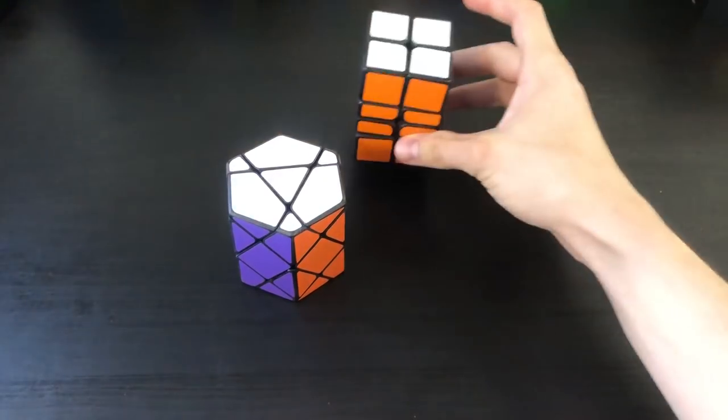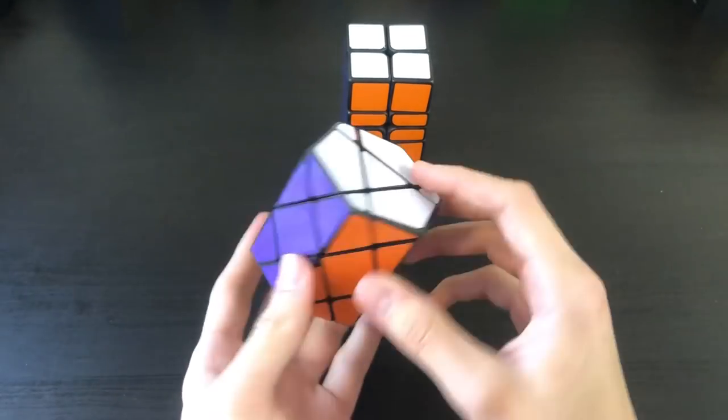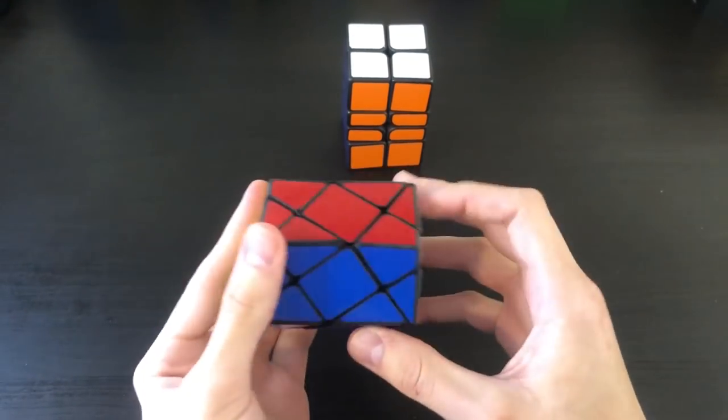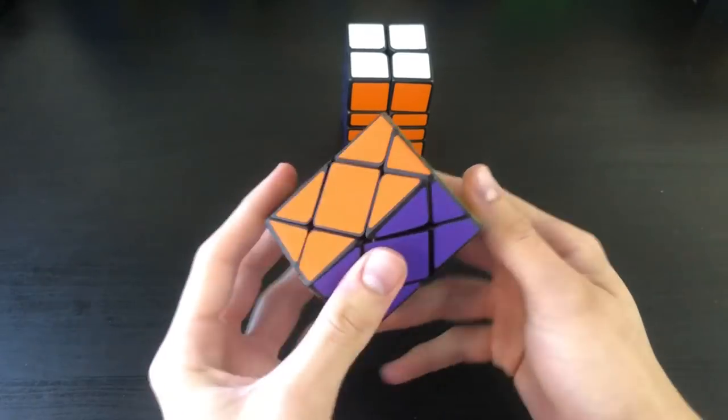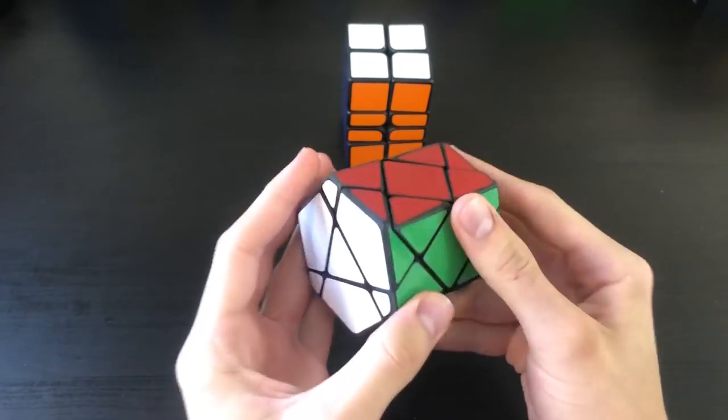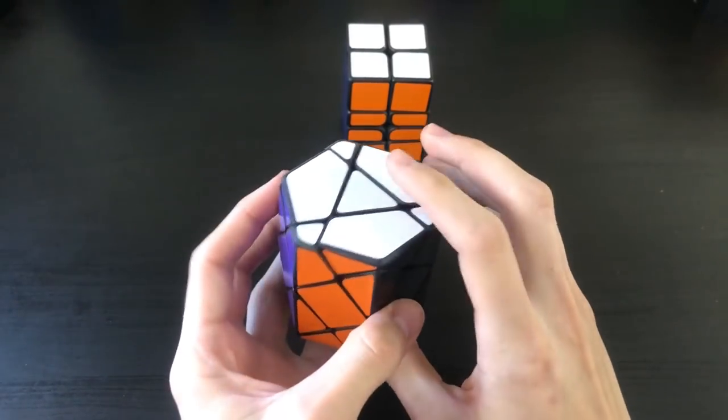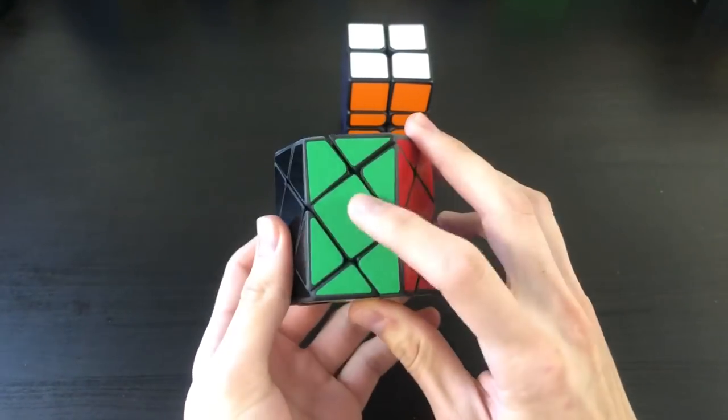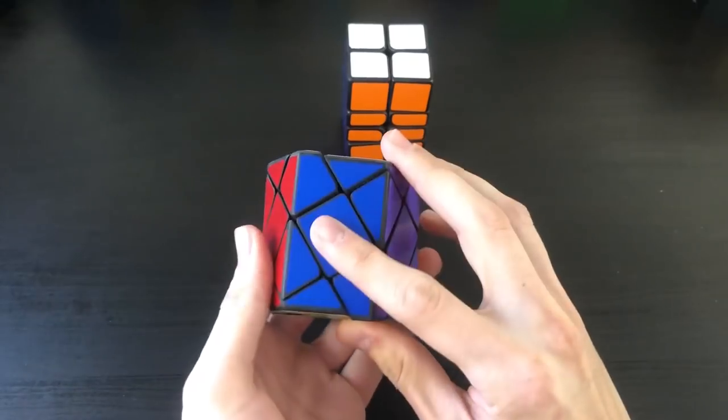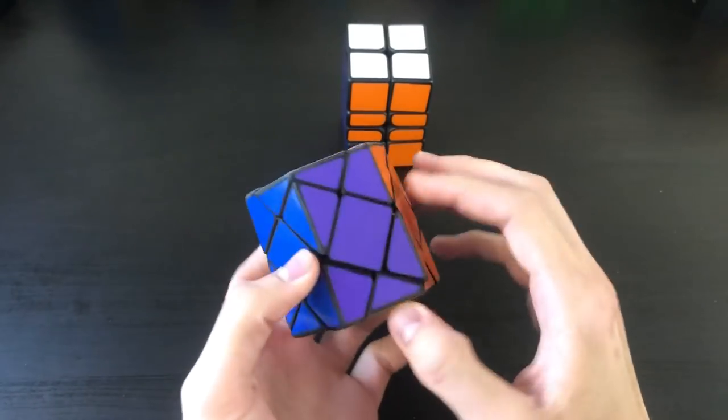Alright, so first we're going to go ahead and cover the hexagonal prism, and so what this is, is it's basically a shape mod of a 3x3, and just appearance-wise, this thing looks very well-made. I really like the colors, we have white, orange, black, green, red, blue, and purple, and then a yellow on the bottom.